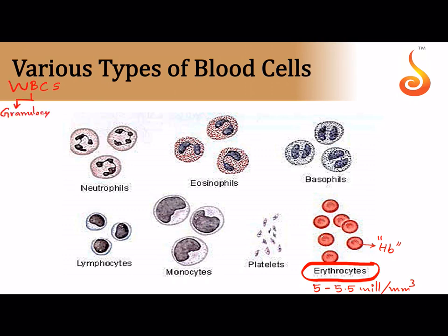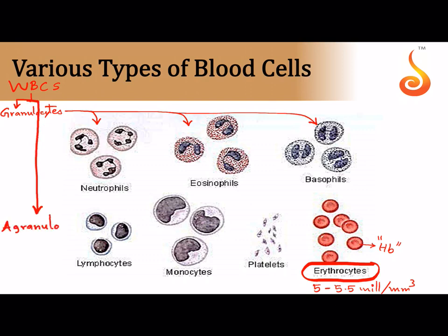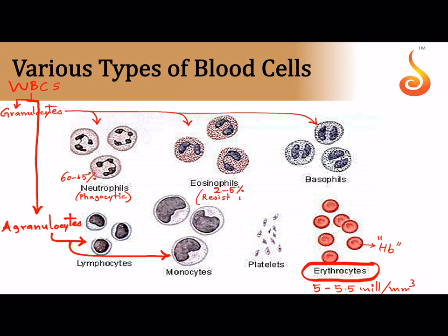WBCs are classified into two types: granulocytes, which have granules in their cytoplasm, and agranulocytes, which have a smooth cytoplasm with no granules. Lymphocytes and monocytes are agranulocytes. 60 to 65% of WBCs are neutrophils, which are phagocytic - they eat up germs by phagocytosis. About 2 to 5% are eosinophils, which help in resisting infections.